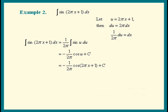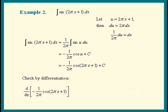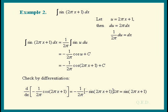Let's check our answer by differentiating. Differentiating the answer, we leave the negative 1 over 2π alone, then differentiate cosine to get negative sine of the expression times the derivative of the inside, which is 2π. The negative 2π's cancel, and we do get positive sine of 2πx plus 1. QED.